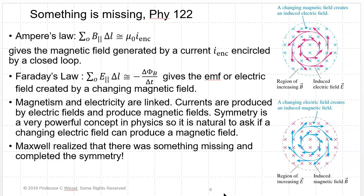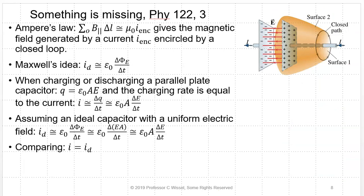Symmetry is always a very powerful concept in physics, so it's natural to ask: can a changing electric field produce a magnetic field? Maxwell realized that this was probably true, that there was something missing, and he completed the symmetry. And symmetry is always the holy grail in physics.